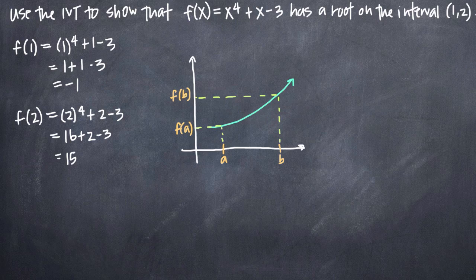What the intermediate value theorem tells us is that the function must assume every single value between a and b. So all of these values in here on this range have to be on the graph of the function.